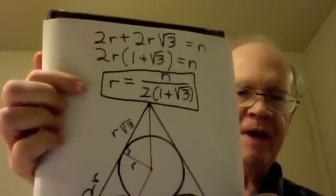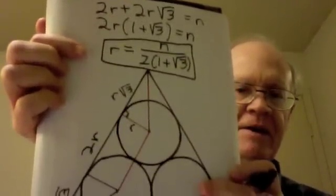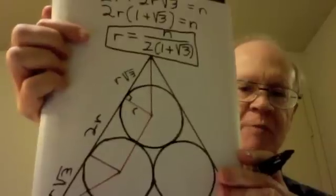r equals n divided by 2 times 1 plus root 3.